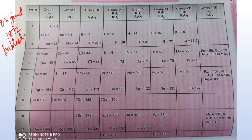Mendeleev's periodic table was published in 1872. There are eight groups and a series of periods. All those elements that were known at that time, Mendeleev gave them a proper arrangement. I had already discussed it earlier, but today I will do it again — that is Mendeleev's Periodic Law.